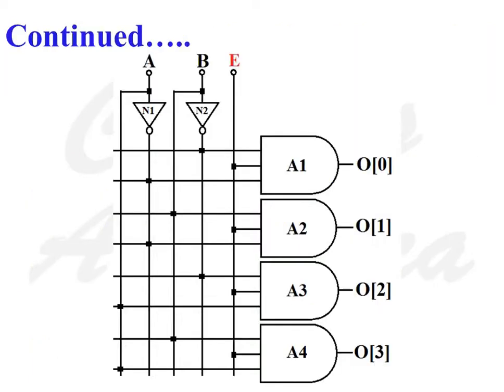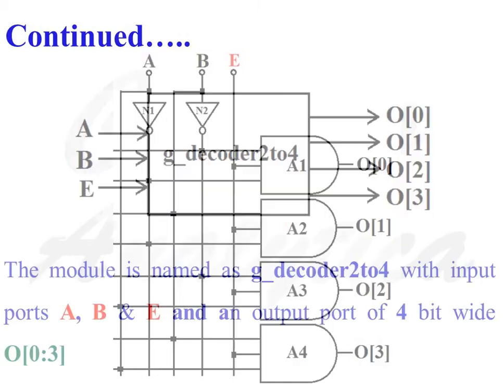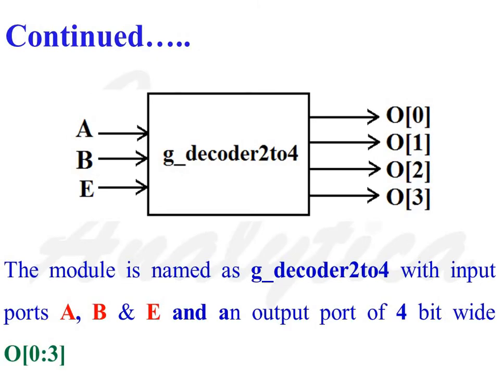This is the internal diagram of a 2 to 4 decoder. The module is named as G_decoder_2to4 with input ports A, B, and E, and an output port O that is 4 bits wide, indexed O[0:3].